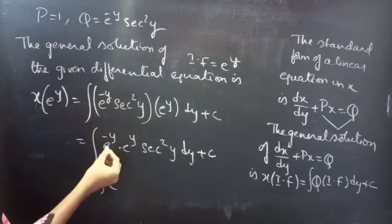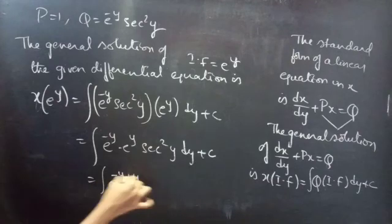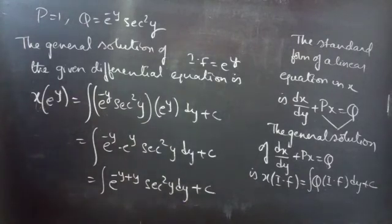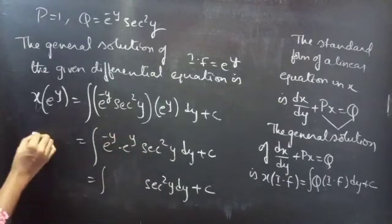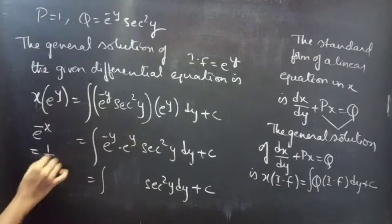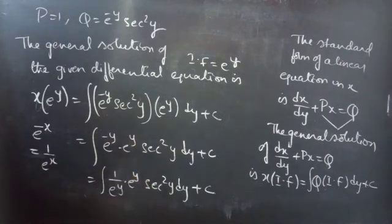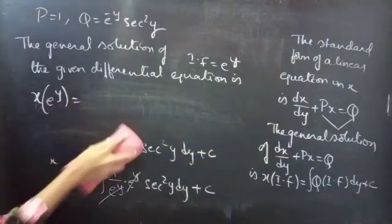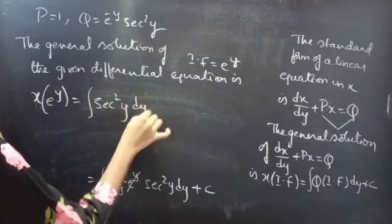This equals to integral e power minus y into e power y into secant square y dy plus c. Here we have e power minus y into e power y, so from this we get e power minus y plus y, which simplifies — e power y gets cancelled — and this equals to integral secant square y dy plus c.